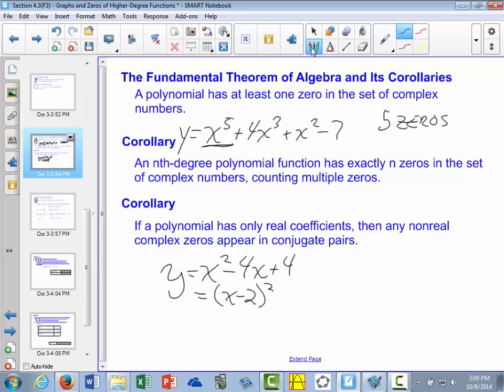And if we think about what we know about transformations, we would see that our graph is the graph of x squared translated two units to the right. So this graph comes down, touches the x-axis at 2, and goes back up.